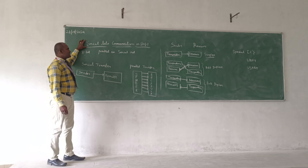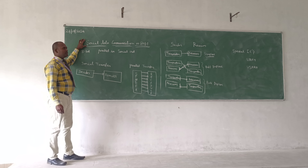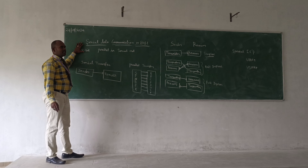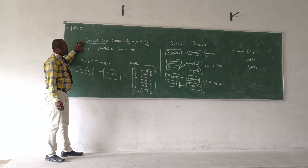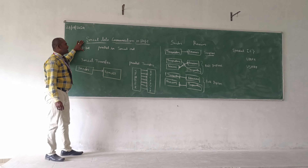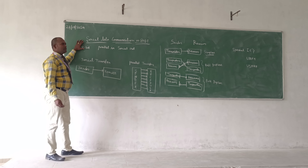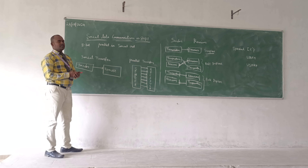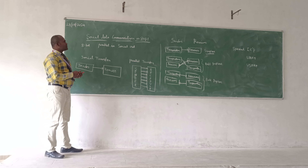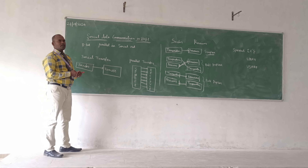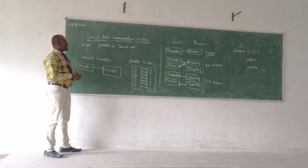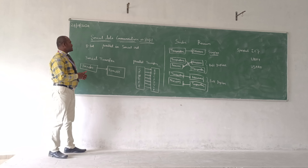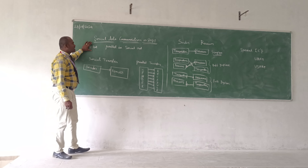Today we are going to discuss serial data communication in 8051. In serial data communication, you transfer data one after another. While transferring data in parallel, it may be more expensive. For example, if you are connecting a printer to a computer and using a long cable, the data may be destroyed or the signal may be lost. For these reasons, we go for serial data communication.